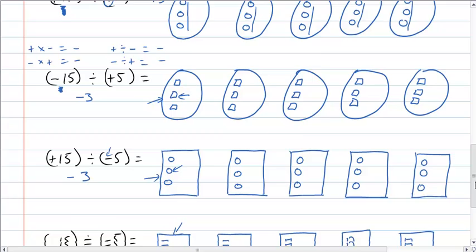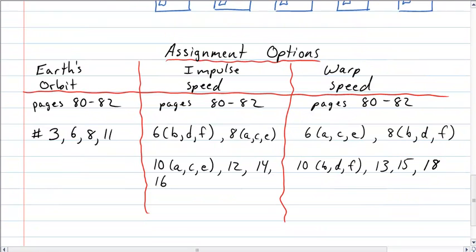Then we can look at questions to do. Here are your assignment options for this lesson. You can choose to do Earth's Orbit by doing questions 3, 6, 8, and 11, I think it's pages 80 and 81. You can choose to do Impulse Speed, which is pages 80 to 82. You can see the questions; just pause the tutorial and copy these down into your notes. Or you can do Warp Speed and do these questions. The choice is yours. But that's your assignment.